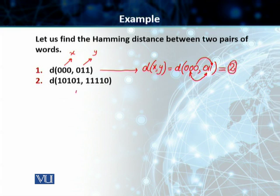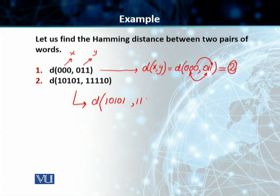Second example: in this particular case, we need to once again find out the Hamming distance between these two. So let's check — the first code word is 1, 0, 1, 0, 1. The second code word is 1, 1, 1, 1, 0.